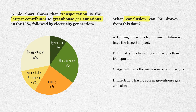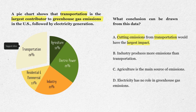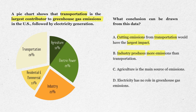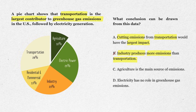Option A: cutting emissions from transportation would have the largest impact. Transportation is the biggest slice of the pie, so reducing it would have the biggest effect. This looks correct. Option B: industry produces more emissions than transportation. That's not true — transportation is 28% while industry is only 23%, so cross this one out. Option C: agriculture is the main source of emissions. Wrong — agriculture is the smallest slice at just 10%. Cross that one out.